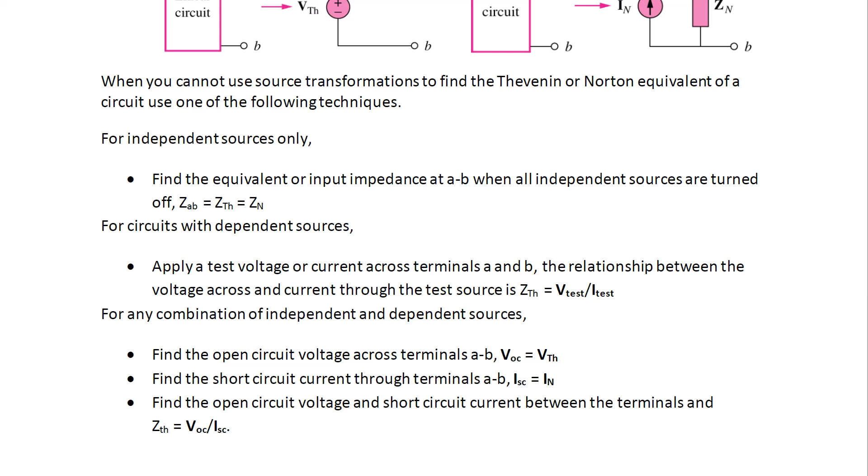For circuits with dependent sources, turn off independent sources and then add a test voltage or current source, then find the voltage across it or current through it, and Z Thevenin equals V_test over I_test. And for any combination of independent and dependent sources, find the open circuit voltage across terminals A and B which is V Thevenin, or find the short circuit current through terminals A and B which is I Norton, and Z Thevenin is V Thevenin over I Norton.